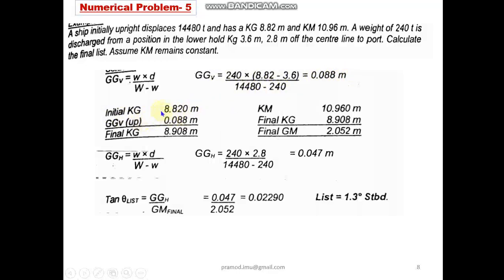This final KG we subtract from KM, we will get final GM as 2.052 meters. Now coming to the horizontal plane, w × d / (W - w). W is 240 tons which is removed, × 2.8, that is the position where the weight is removed from, divided by the final displacement. You will get 0.047. If I take the ratio of 0.047 to the final GM, I will get the value of tan θ = 0.022.